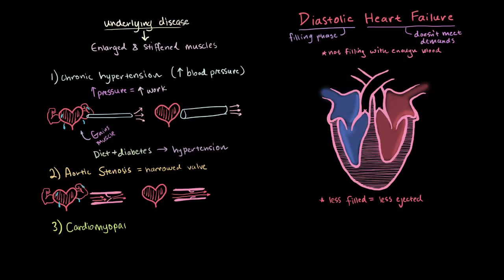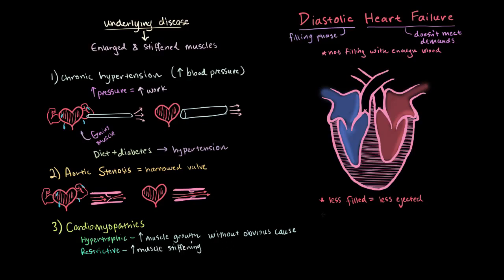Next are cardiomyopathies, which mean heart muscle diseases. For diastolic heart failure in particular, there are two to focus on. The first is hypertrophic cardiomyopathy — hypertrophy means muscle growth — and this cardiomyopathy causes muscle growth, often without an obvious cause. The second is restrictive cardiomyopathy, which causes stiffer and more rigid muscles and restricts the ventricles from expanding. These two cardiomyopathies hit the nail on the head for diastolic heart failure: either stiffer muscles or enlarged muscles. Other causes and risk factors include old age and coronary artery disease, though some of these overlap with systolic failure, and the mechanisms distinguishing the two remain largely unknown.